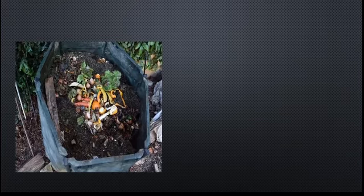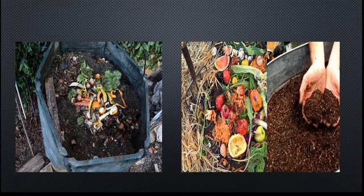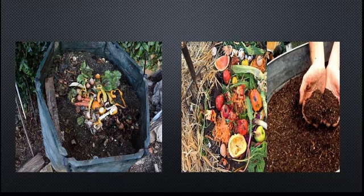Cover the waste with a layer of soil, spray some water and keep it wet. Keep adding layers of waste and soil for a month or so. The lower layer will get changed into a black colored compost. This compost is rich in nutrients that help in plant growth, and it can be used in farms, fields or gardens to grow plants.